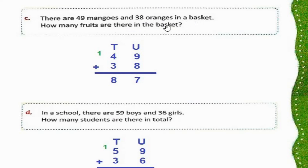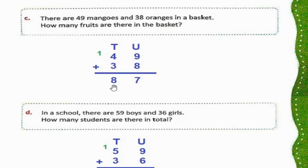Part C: There are 49 mangoes and 38 oranges in a basket. How many fruits are there in the basket? 49 mangoes hain aur 38 oranges. Total fruits maloom karne ke liye 49 plus 38 karenge. 9 plus 8 is 17 — 7 here and 1 carry forward. 1 plus 4 is 5, 5 plus 3 is 8. Total fruits in the basket are 87.